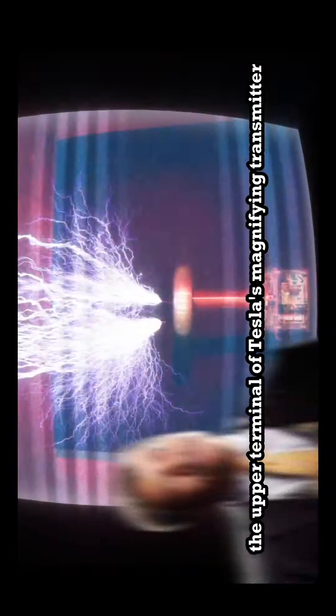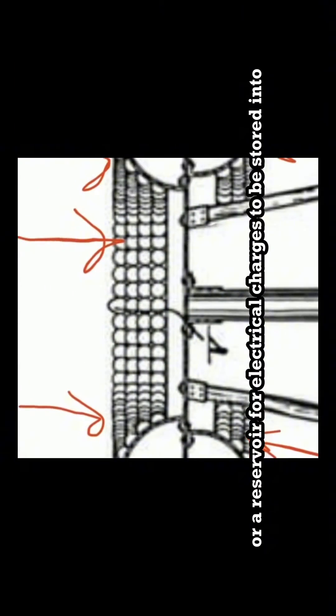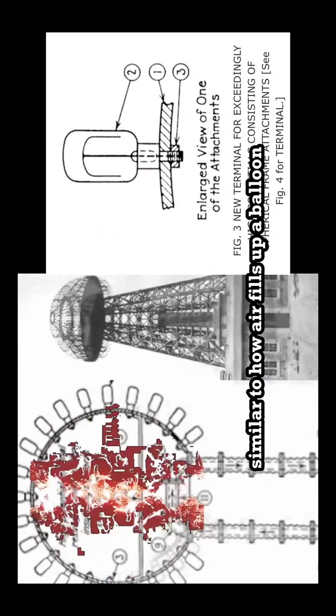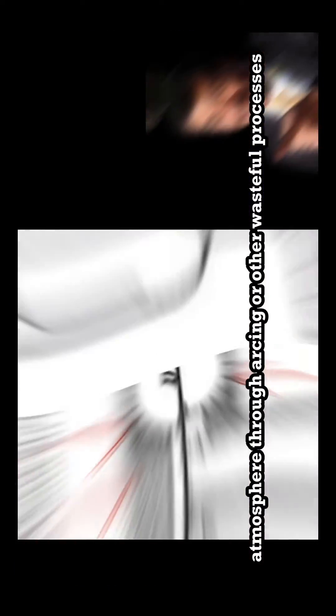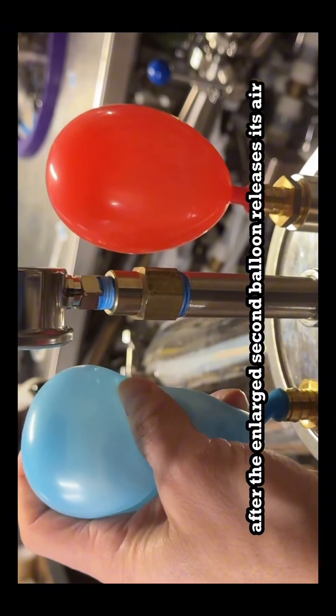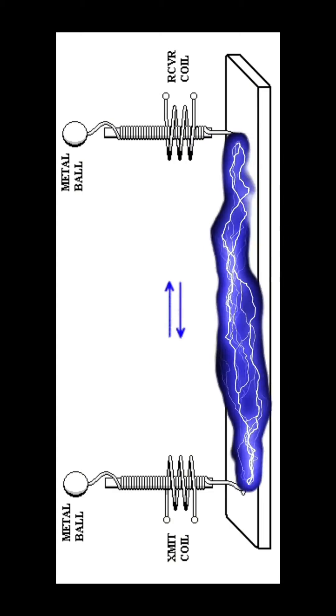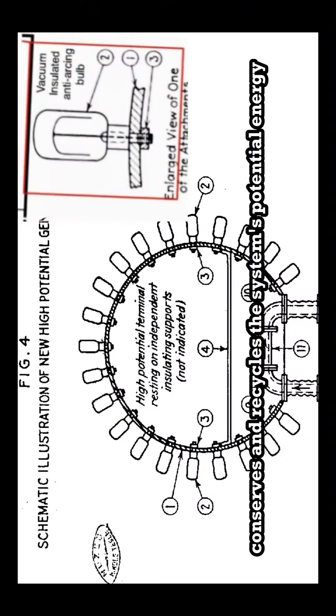The upper terminal of Tesla's magnifying transmitter, often seen as a mysterious component, actually plays a significant role in the system's efficiency. Think of it as a large capacitor or a reservoir for electrical charges to be stored into. When the system is activated, charges surge upwards into this terminal, similar to how air fills up a balloon in our previous analogy. Instead of letting these charges dissipate into the atmosphere through arcing or other wasteful processes, the upper terminal conserves them, allowing them to bounce back towards the ground. It's akin to the return discharging of air in our balloon analogy, after the enlarged second balloon releases its air back through the hose after the squeezed balloon is released. The charges reverse their course and flow back the way they came, oscillating one completing cycle. This is how the upper terminal acts like a spring in its function as a giant capacitor and charge reservoir. It conserves and recycles the system's potential energy rather than losing it.